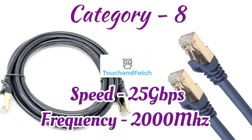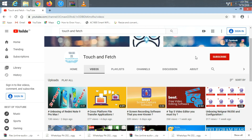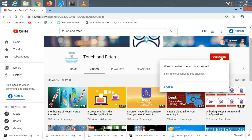The next one is Cat8. Cat8 is called Category 8 cable. Speed: 25 Gbps, frequency: 2000 MHz. This cable is the most shielded one, covers more distance than any other cable, and is highly expensive. It is mainly used for high-speed home and data center applications. Thanks for watching — if you are not subscribed, please subscribe and stay tuned for updates.